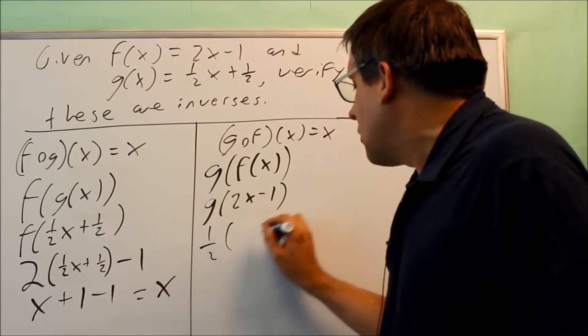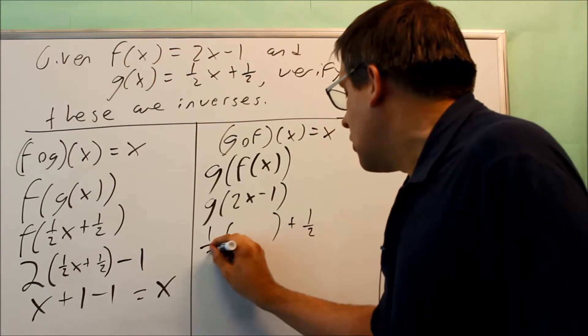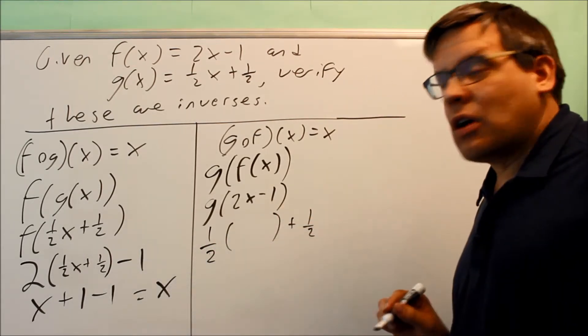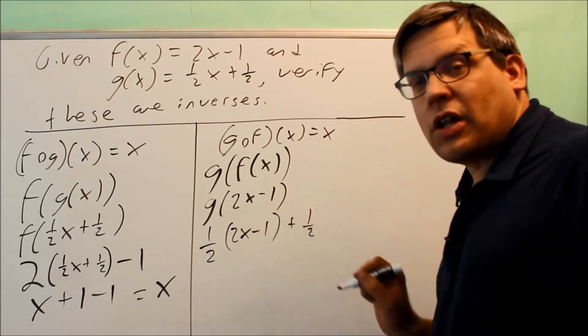g is one-half. I'm going to take out the x, and then I have another one-half. So the space that's in there I'm going to fill in with 2x minus one, and now I'm going to multiply that out.